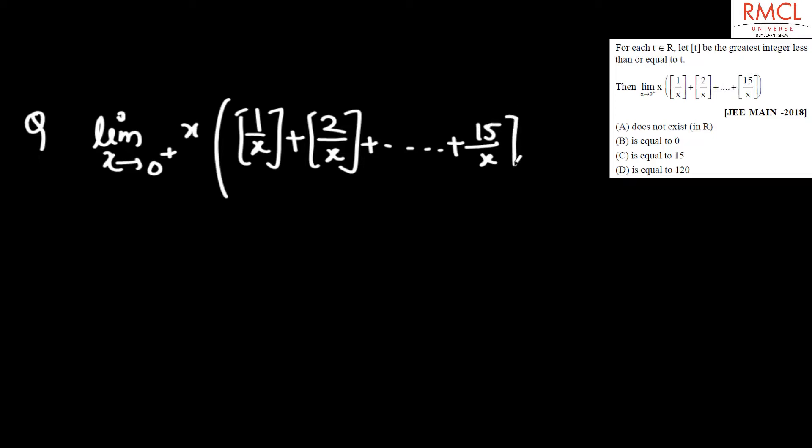Plus 15 upon x equals to what? First option: doesn't exist. Second: is equal to 0. Third: is equal to 15. Fourth: is equal to 120. Which option is correct?